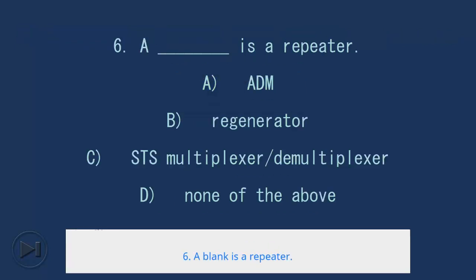6. A blank is a repeater. A. ADM, B. Regenerator, C. STS multiplexer, D. None of these. Answer: B. Regenerator.